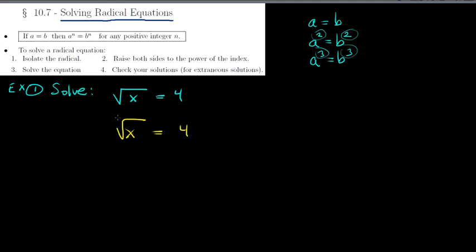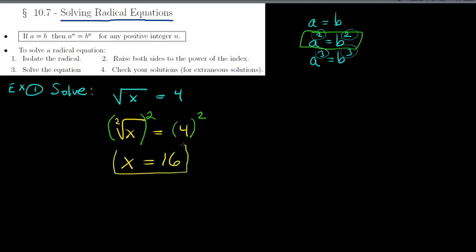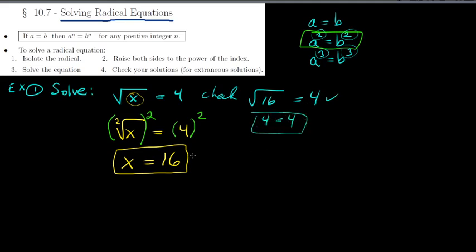What undoes the square root? Squaring it. So if we square both sides, the square root on the left cancels and we're left with x. On the right side, 4 squared is 16. The next step is to check: if we replace x with 16, we get the square root of 16 equals 4, which is true.